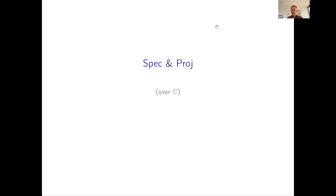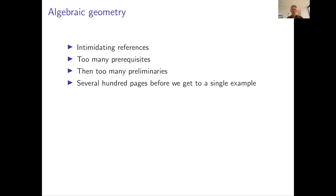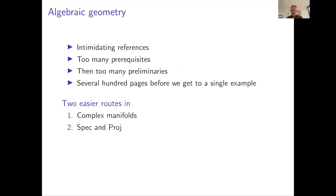Thanks for the introduction. So I understand you've been having courses on algebraic geometry, so I'm going to give a slightly different point of view, in some sense easier. The problem with introductory courses to algebraic geometry is just always that it's too big a subject, there's too many prerequisites, the references are intimidating and thousands of pages long. There's always tons of preliminaries, and it's very hard to get even to a simple example sometimes, depending on the route you take. Part of that is because algebraic geometry has been rewritten to include all of number theory as well. So I'm going to ignore that and work over the complex numbers.